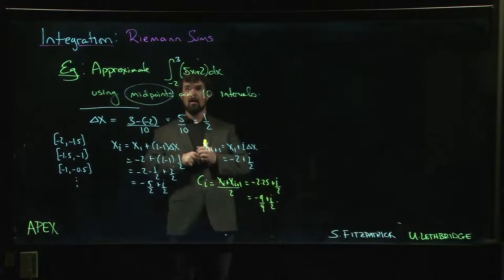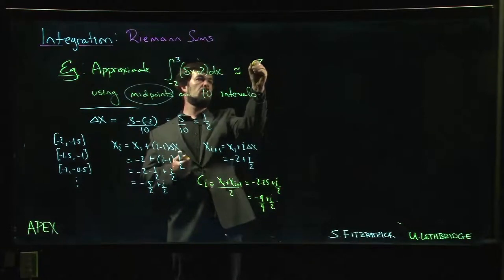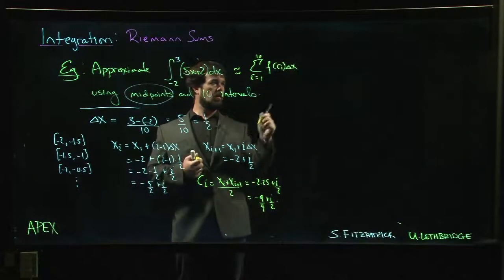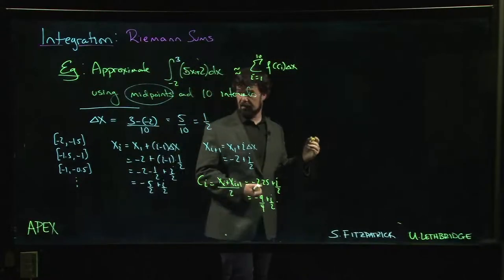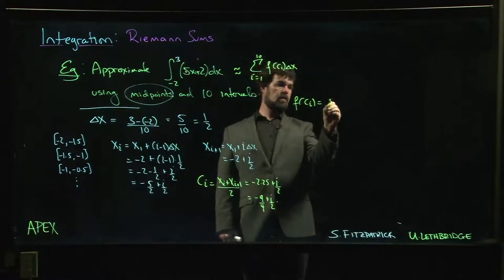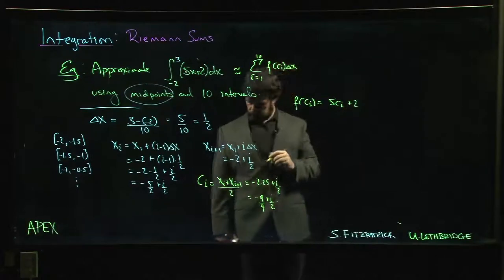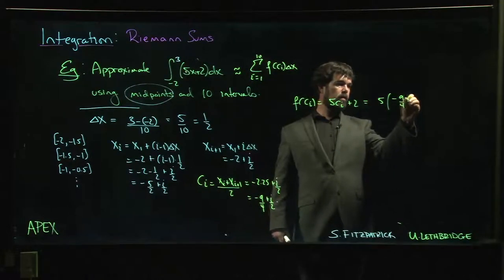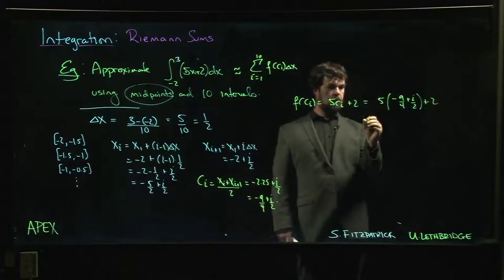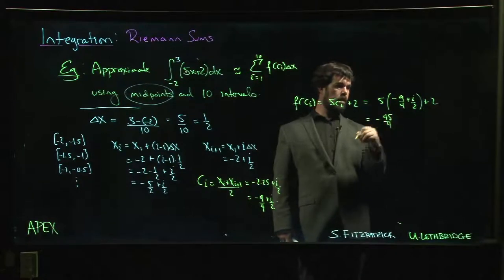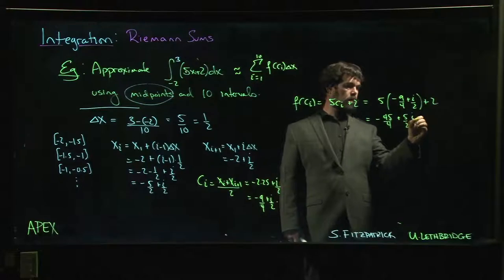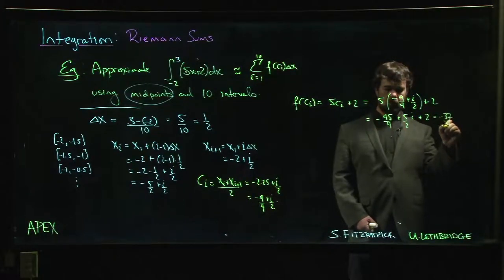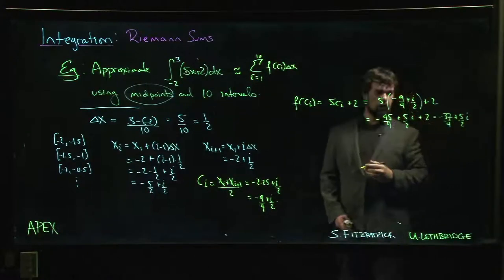What's next? Well, so we want to approximate this using a Riemann sum with 10 rectangles and midpoints. So we've got our delta x, we've got our c_i. So the next thing we need is we need f of c_i. So f of c_i is going to be 5 c_i plus 2. So it's going to be 5 times minus 9 over 4 plus i over 2 plus 2. So minus 45 over 4 plus 5 over 2 i plus 2, which is 8 over 4. So overall minus 37 over 4 plus 5 over 2 i.